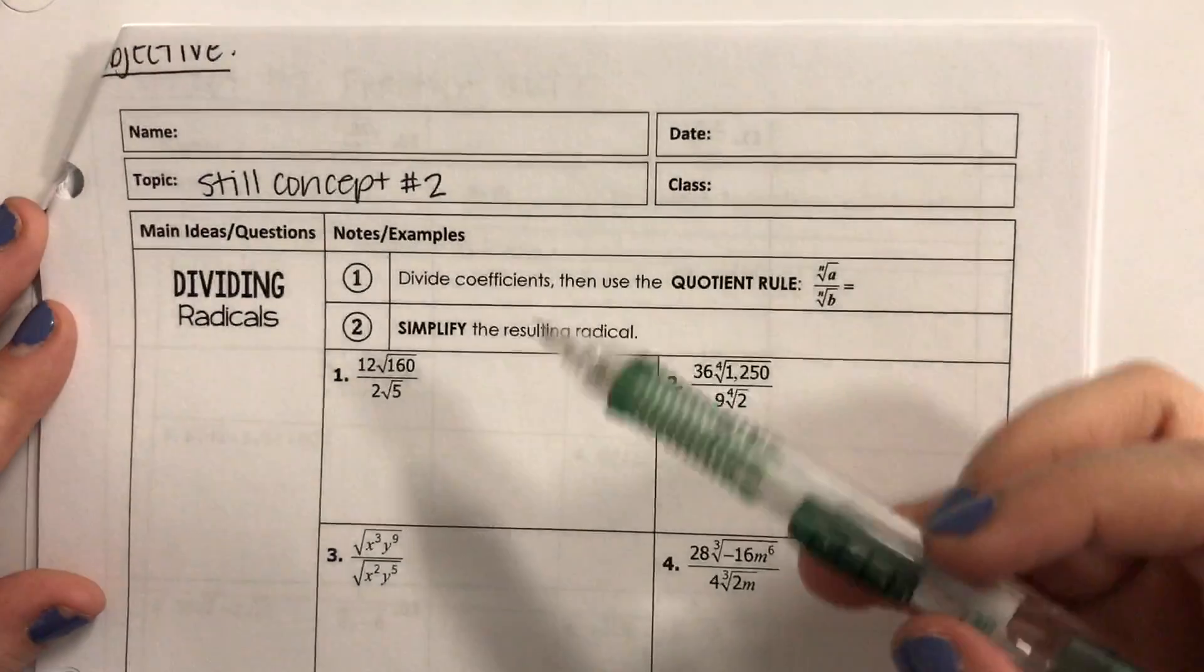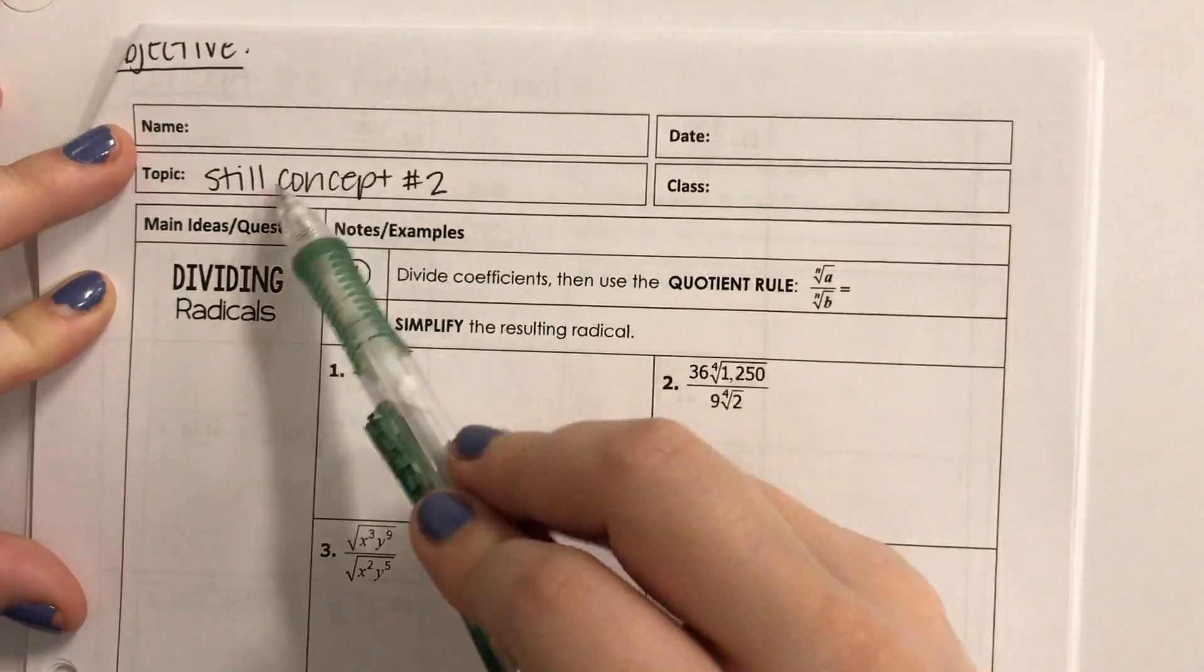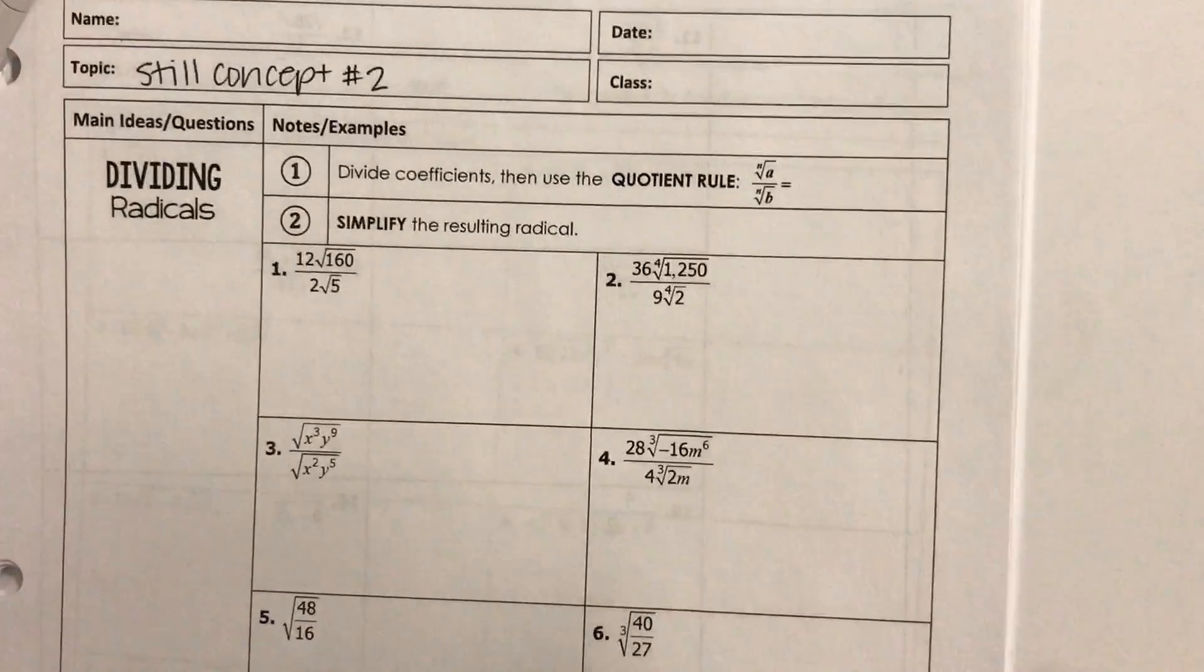Okay, and just when you thought we were done with concept two, we are not. We still have to divide. So, still concept number two, we are now dividing radicals.